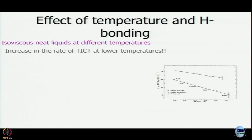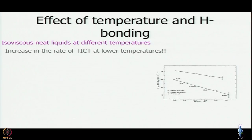They painstakingly determined the viscosities of neat liquids at different temperatures. You cannot compare an alcohol with a non-polar solvent. They took different solvents at different temperatures, keeping viscosity the same for all points: solvent A at 25°C, solvent B at 35°C, solvent C at 45°C — isoviscous neat liquids at different temperatures.